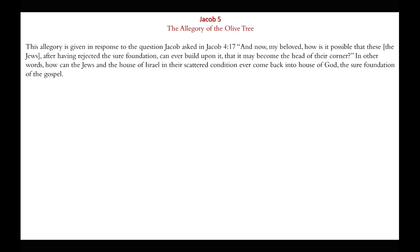Jacob chapter 5, the allegory of the olive tree. This allegory is given in response to the question Jacob asked in Jacob 4:17: how is it possible that the Jews, after having rejected the sure foundation, can ever build upon it, that they may become the head of the corner? In other words, how can the Jews and the house of Israel, in their scattered condition, ever come back into the house of God, the sure foundation of the gospel? Chapter 5 is an explanation of how the house of Israel and the Jews that are scattered can come back together into the true fold of God through this allegory.